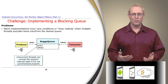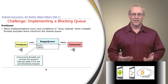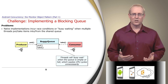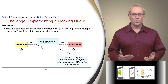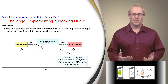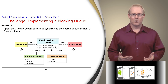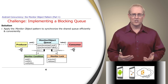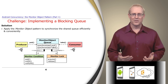For example, concurrent threads can corrupt the queue's internal state if it's not synchronized properly. Likewise, threads will incur busy waiting when the queue is empty or full, which wastes CPU cycles. A common solution to these problems is to apply the monitor object pattern to synchronize the shared queue in a manner that's both efficient and relatively easy to program.